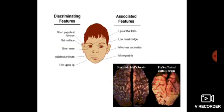Examples of normal variation include epicanthal fold, low nasal bridge, minor ear abnormality, micrognathia, short palpebral fissure, flat mid-face, short nose, indistinct philtrum, and thin upper lip.